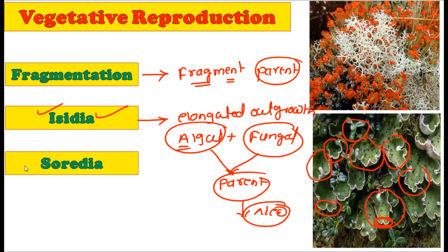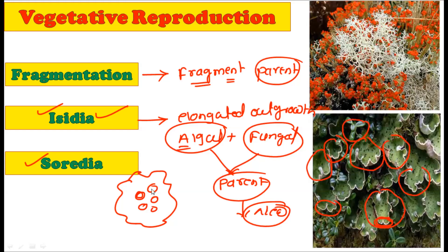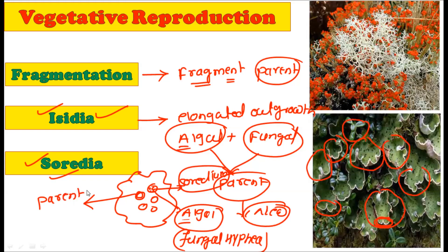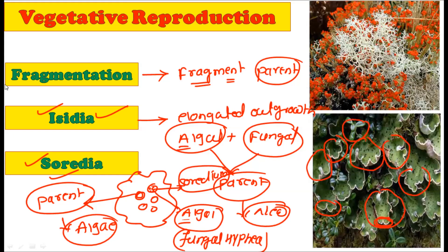The third method is by soredia. Soredia are formed on the middle of the thallus. They appear as patch-like structures and are formed inside the structure called the soredium. The soredium contains soredia, which contain algal cells surrounded by fungal hyphae. When these algal cells surrounded by fungal hyphae — collectively called soredia — are separated from the parent plant and come into contact with suitable algae, they start growing into a new thallus. So vegetative reproduction in lichens occurs by fragmentation, isidia, and soredia.